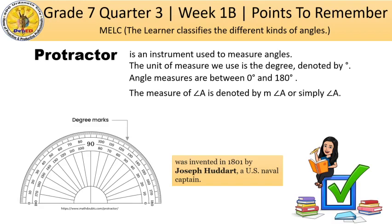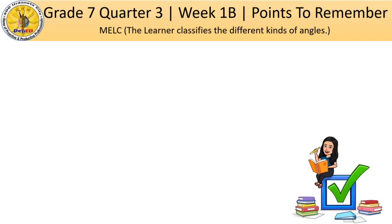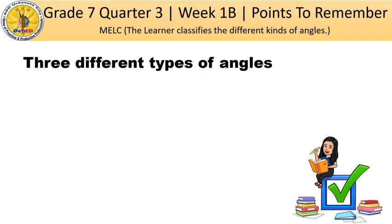The measure of angle A is denoted by a small letter M followed by the symbol of the angle and then the letter — so 'm angle A.' Or simply 'angle A' is also acceptable. Now, we have here the three different types of angles. The first one is the acute angle.